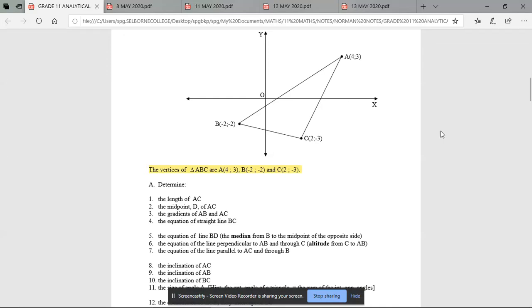Hey Greg Levins, here is the exercise you've been working through for the last few days. It gives you a triangle and tells you that the vertices of the triangle are A(4,3), B(-2,-2), and C(2,-3).